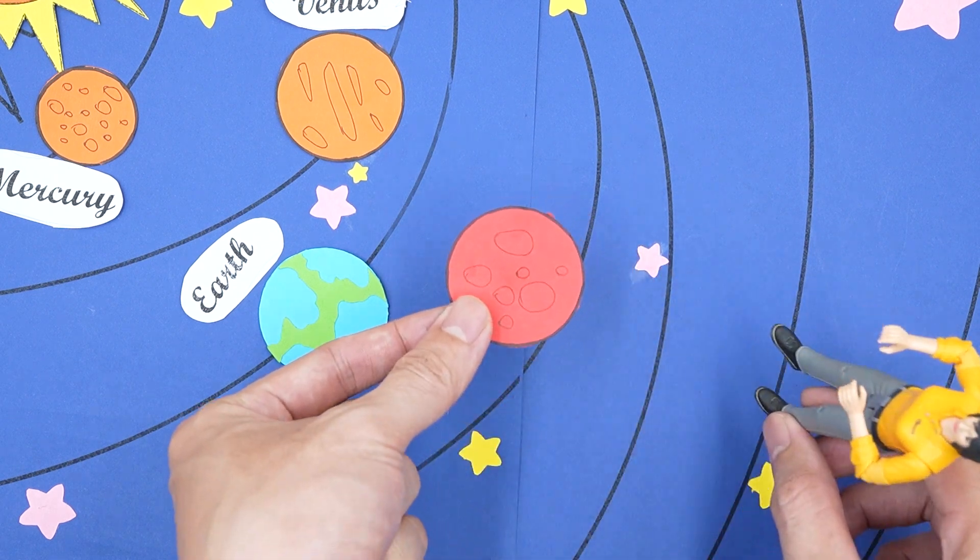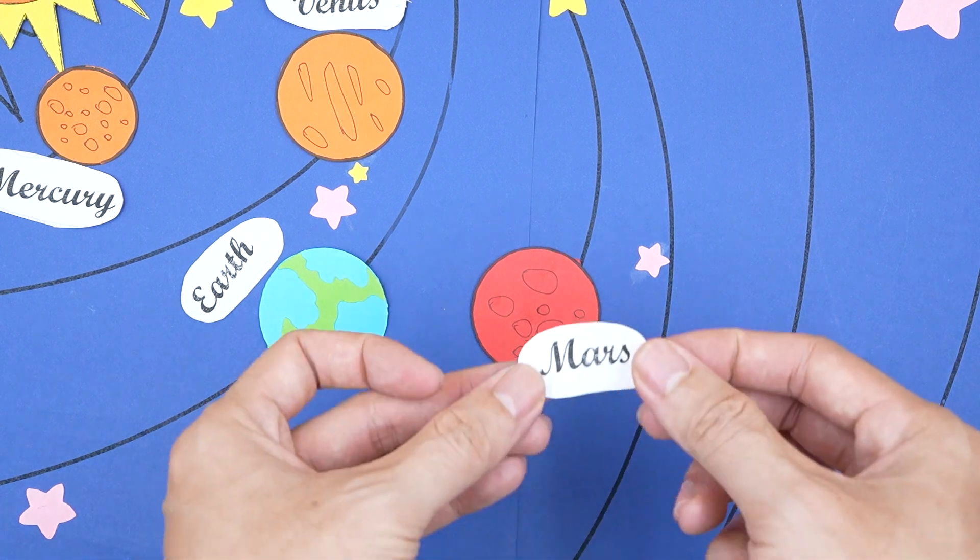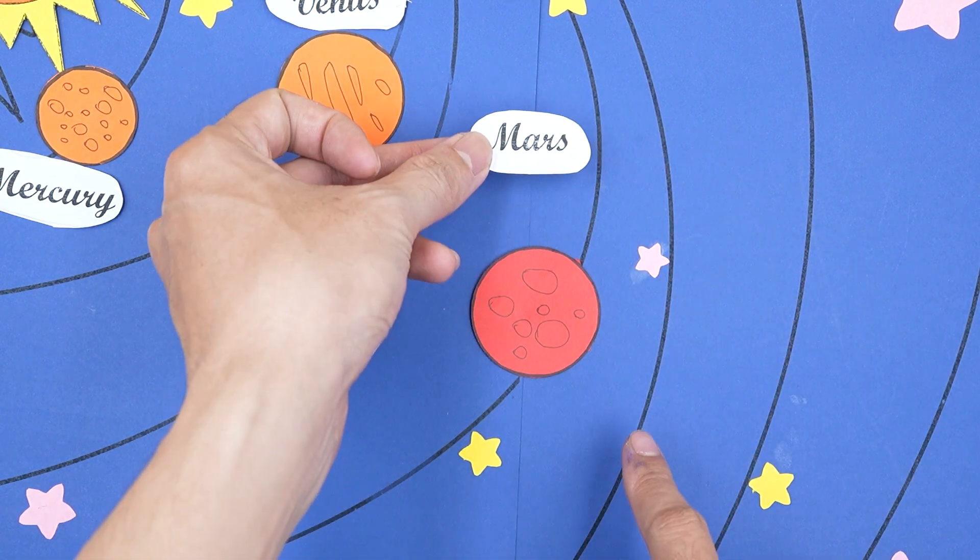Mars is red because its surface is covered with iron debris. Okay, I will help you put Mars in the fourth position in the solar system. So now I will attach the word Mars to this position.